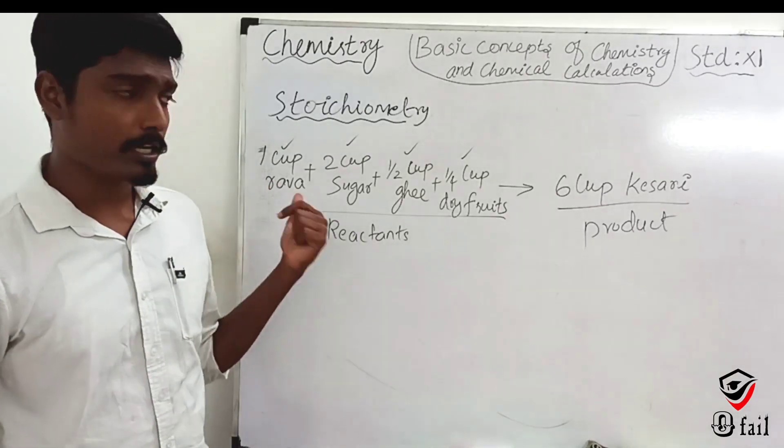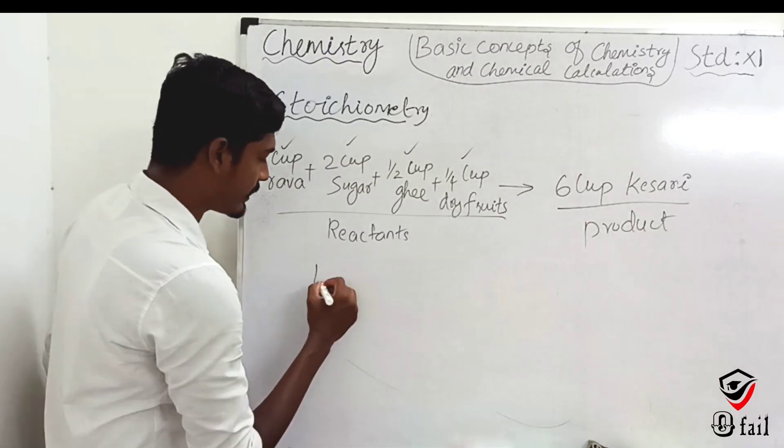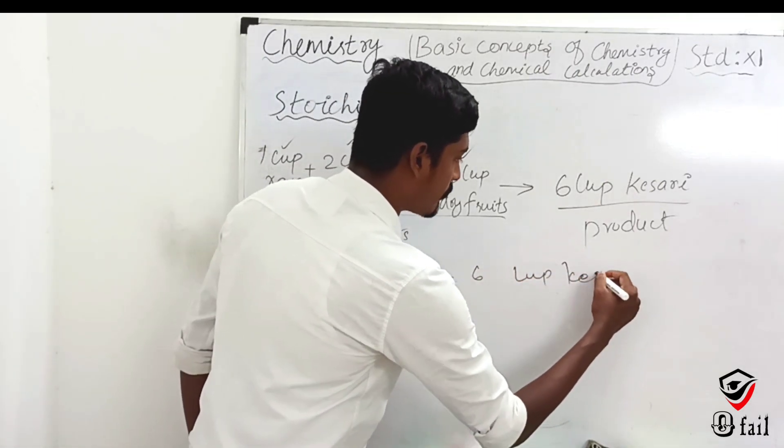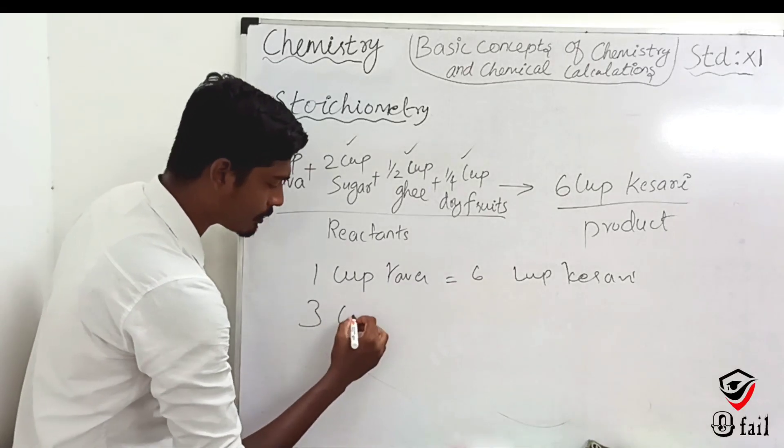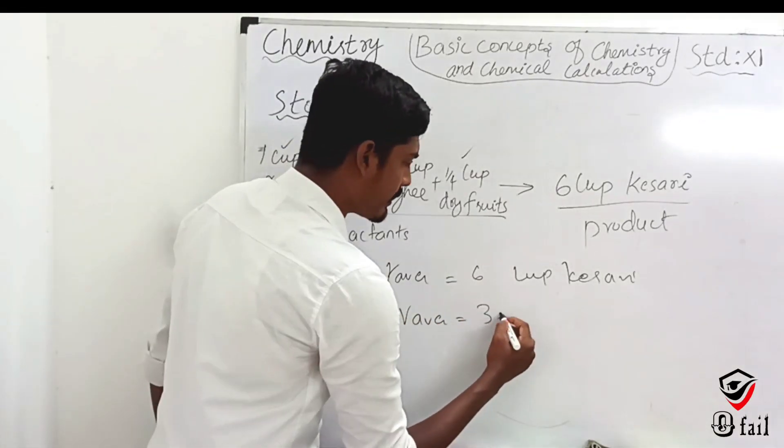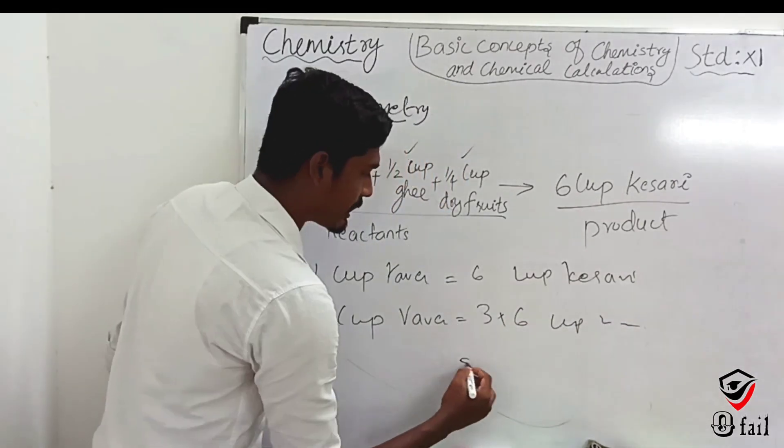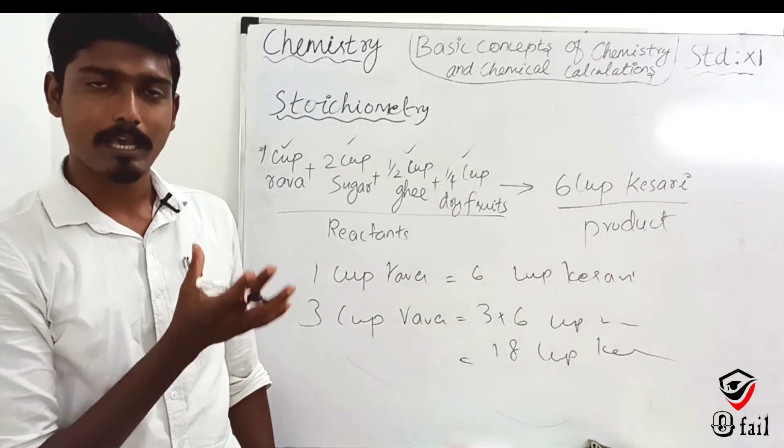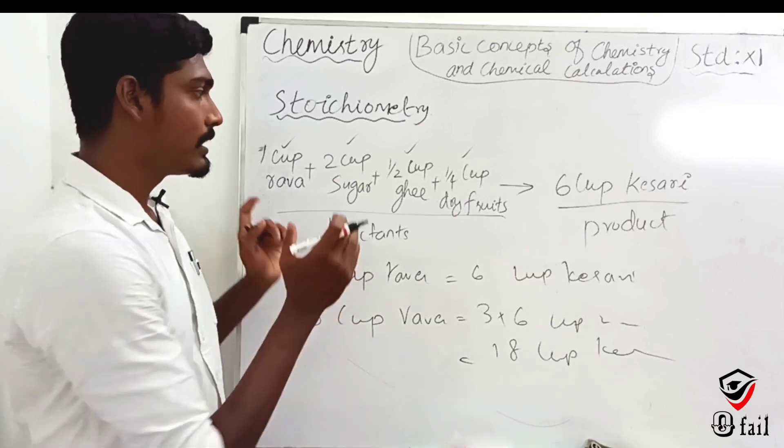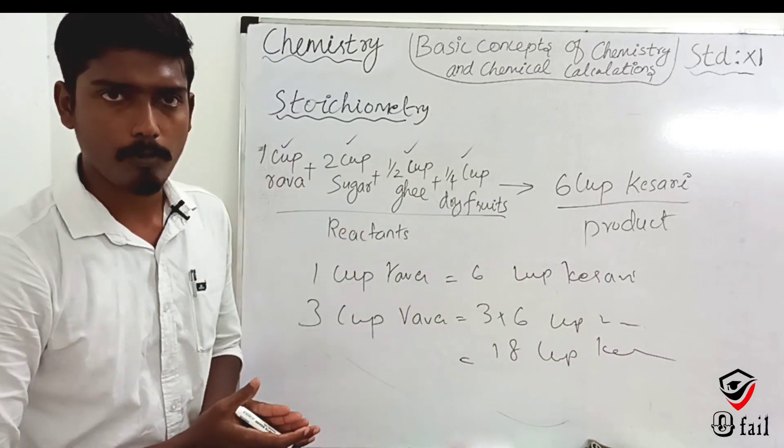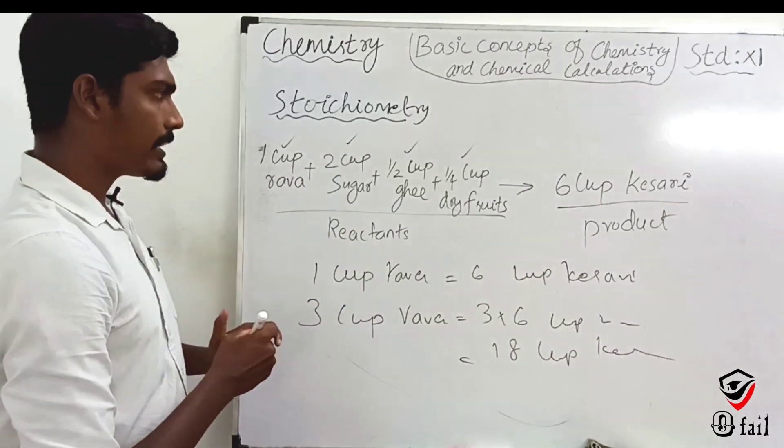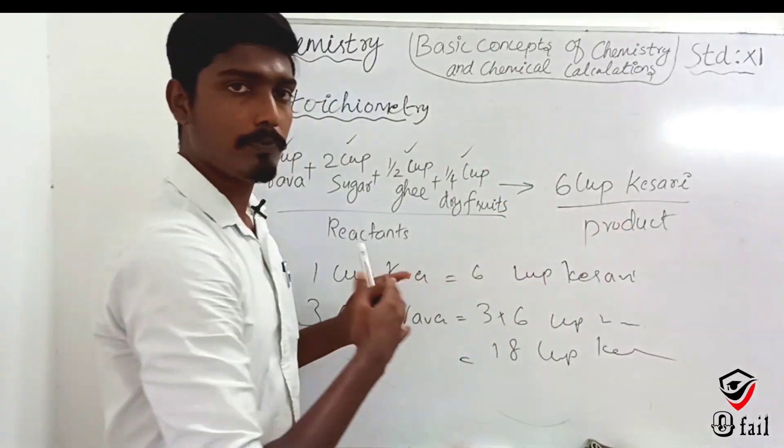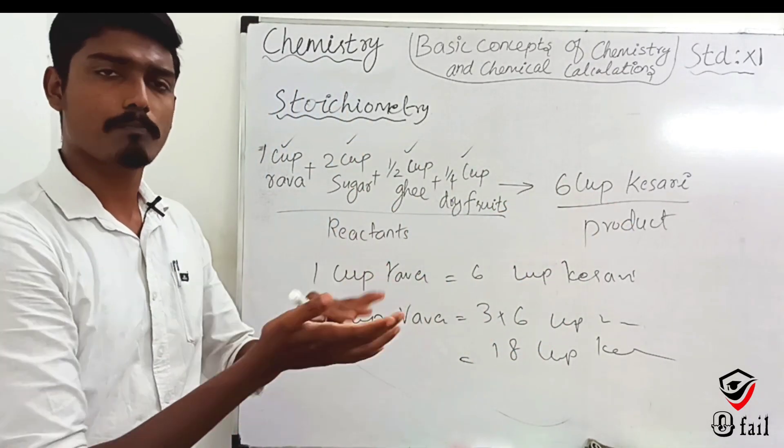Next, 1 cup rava equals 6 cups kesari. If we put 3 cups rava, then we get 18 cups kesari. This is simple ratio - the relationship between reactant and product - and we use it with simple mathematics.